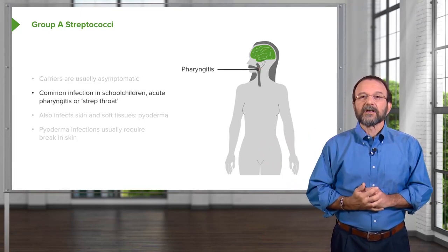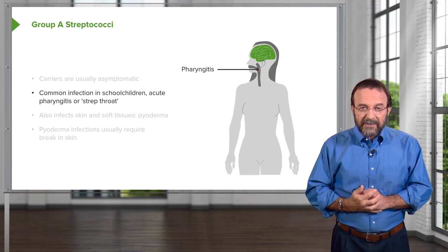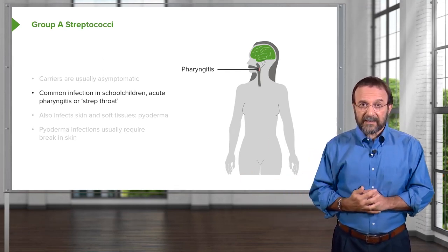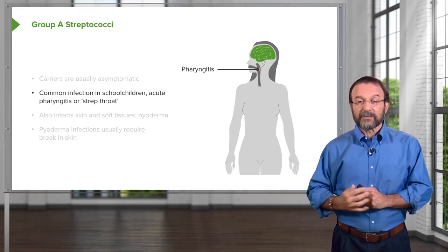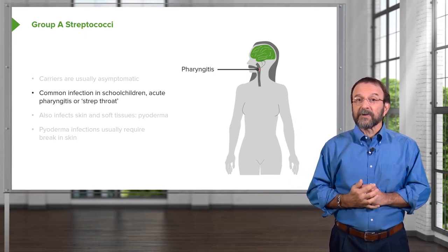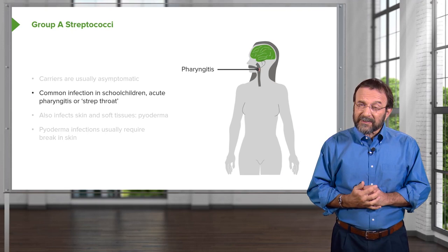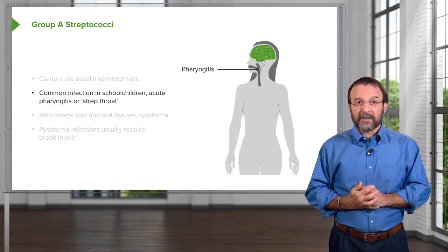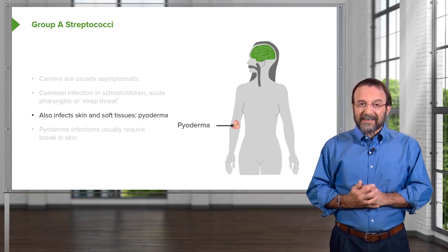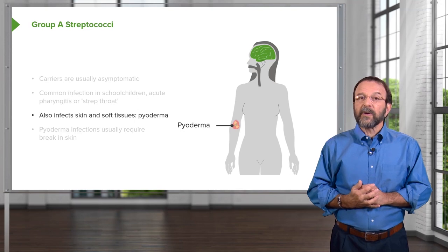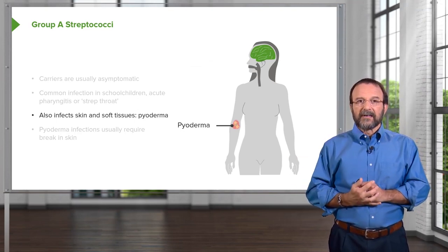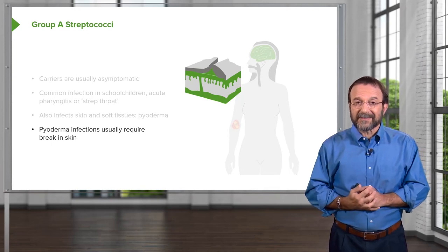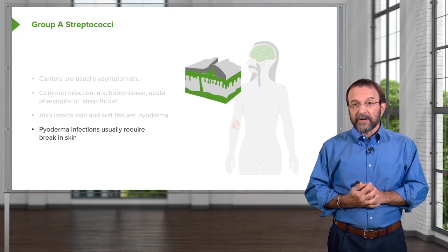When you carry streptococci you're usually asymptomatic — a carrier who could potentially infect others but remains okay. When disease occurs it's usually pharyngitis, or strep throat, a rather painful throat infection common in school children. The bacteria may also infect the skin and soft tissues causing lesions called pyodermas — you can see one here on the young lady's arm. Pyodermal infections usually require a break in the skin to introduce the bacteria.